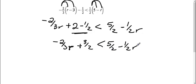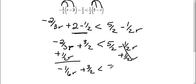Then I need to get my r's on the same side, so I'm going to need to move this r, I'm going to add one-half r to both sides. So a negative two-thirds plus a one-half is going to give me negative one-sixth r, and I still have plus three-halves is less than, this side's gone, five-halves.